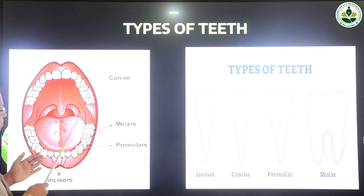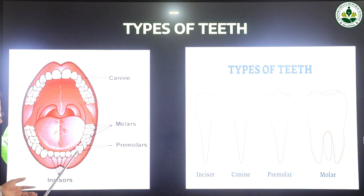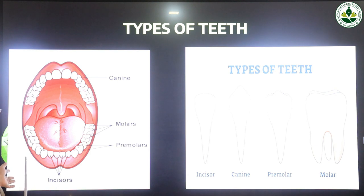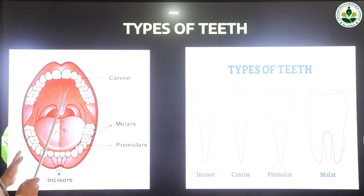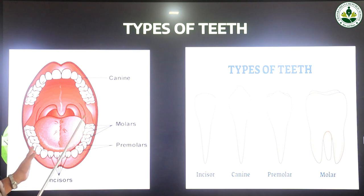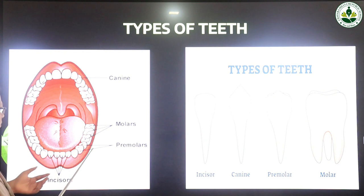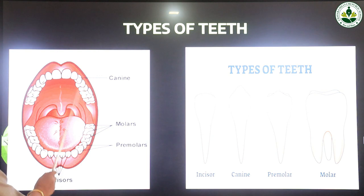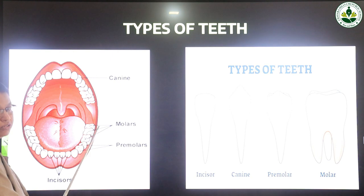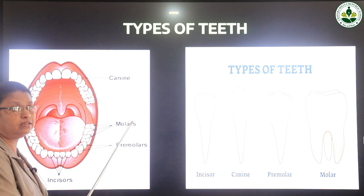Next to the canines are the premolars. You can see the canine tooth, then 2 on the right side and 2 on the left side in each jaw, making 8 premolars in total. Next to the premolars are the molars — 3 on each side of each jaw — so 3+3=6 in the lower jaw and 6 in the upper jaw, giving 12 molars in total.